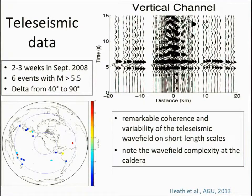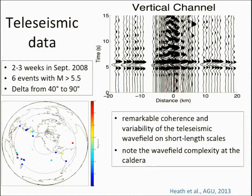We were very lucky — in the two or three weeks that these instruments were out, they also recorded a number of very nice teleseisms. The distribution of the teleseisms is shown in the lower left. The upper right shows the vertical channel data for one of the nicer examples. You can see remarkable coherence in the teleseismic wavefield, but also variability on very short length scales, which is quite interesting. There is also considerable complexity of the wavefield beneath the caldera, where the instruments are more closely spaced.